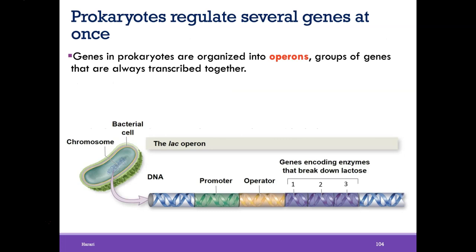Prokaryotes are the simplest organisms and they regulate several genes at once. We'll talk about prokaryotic gene expression first, very quickly, then focus more on eukaryotic gene expression. Bacteria, like the ones in our gut, only produce enzymes when they're needed. Genes in prokaryotes are organized into operons — groups of genes that are always transcribed together.